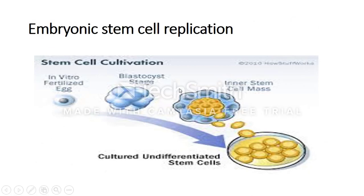Now, on to adult stem cells. What these stem cells do is maintain tissues in our body. They are usually located in a stem cell niche, which is adjacent to cells that signal self-renewal or differentiation. These cells are responsible for things such as plant root growth and other processes that continue through the life cycle at different stages.